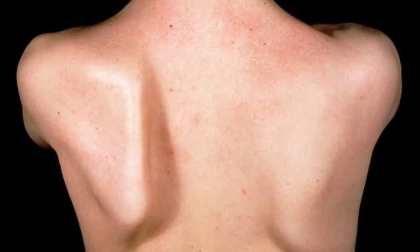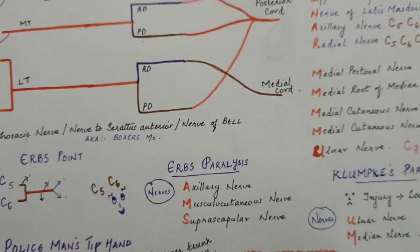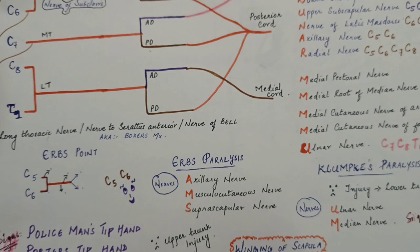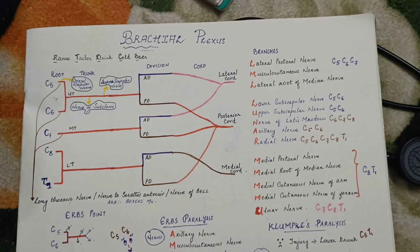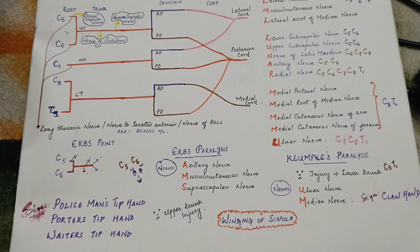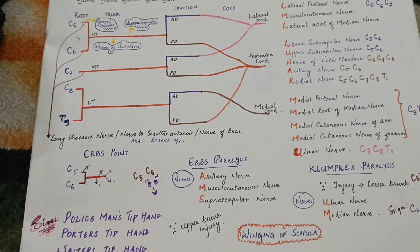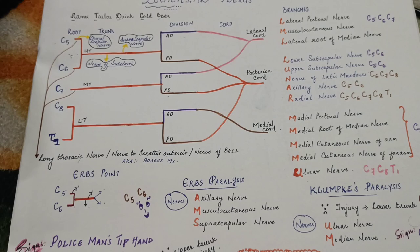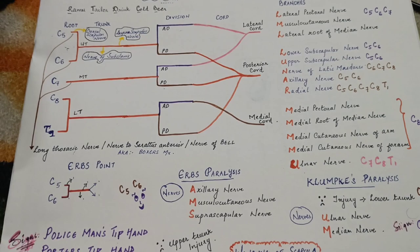Here you can see the medial border of scapula becomes prominent — this is winging of scapula. We've now finished the paralysis types, winging of scapula, and the basics of brachial plexus. This is a very important chapter, so sections will be kept small for better understanding. Hope you all liked this video — like, share, and comment. Thank you.